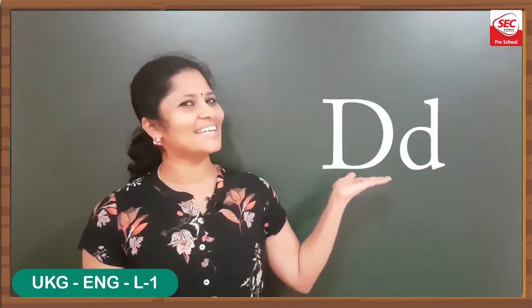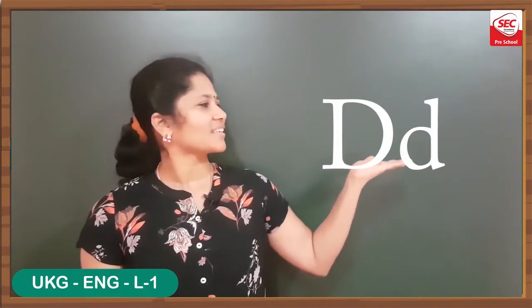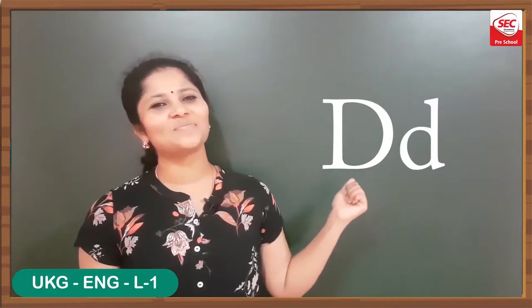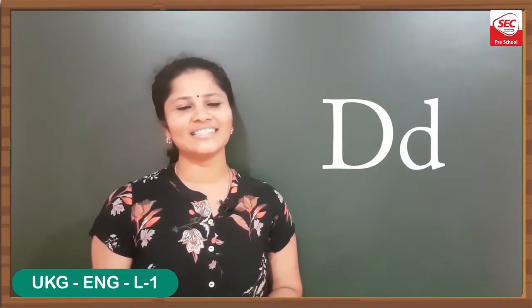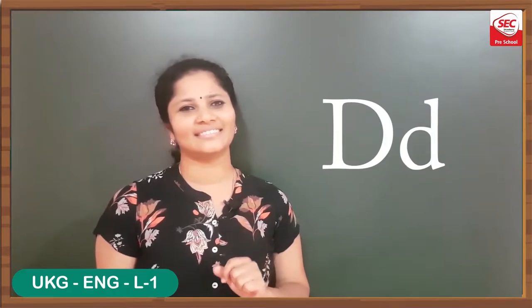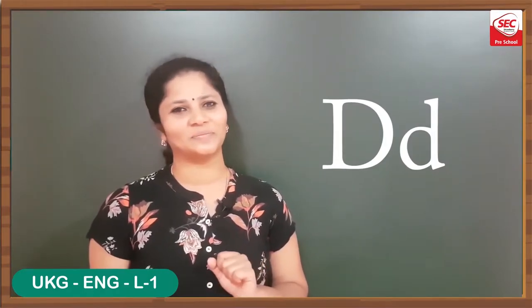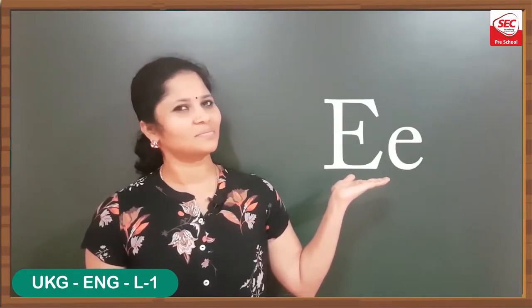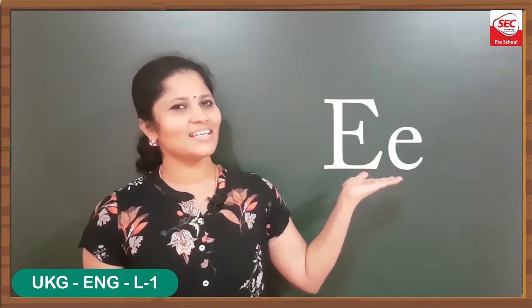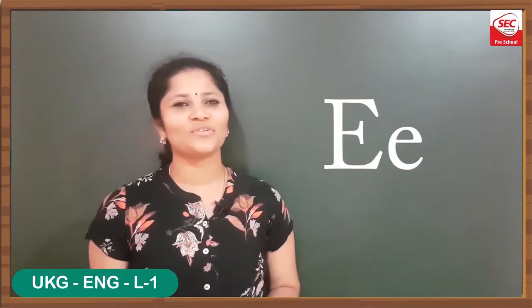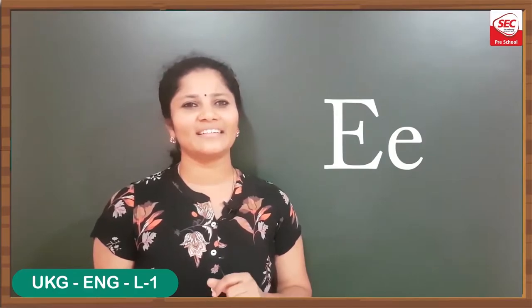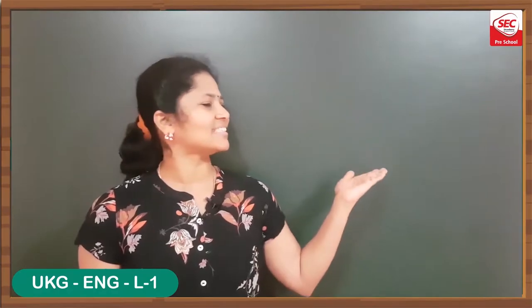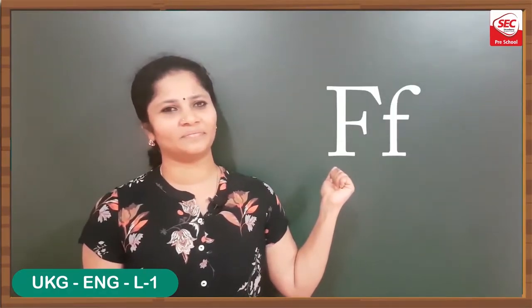This is letter D — capital D and small d. The sound of D is 'd'. The next letter is E — capital E and small e. The sound of E is 'e'. This is letter F, and then letter G — capital G and small g. The sound of G is 'g'.